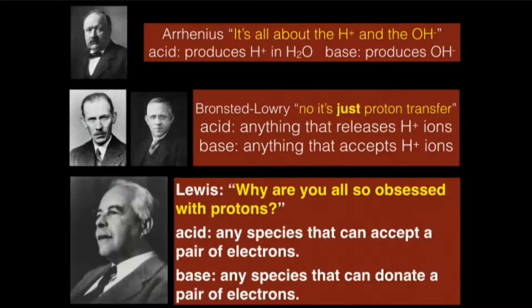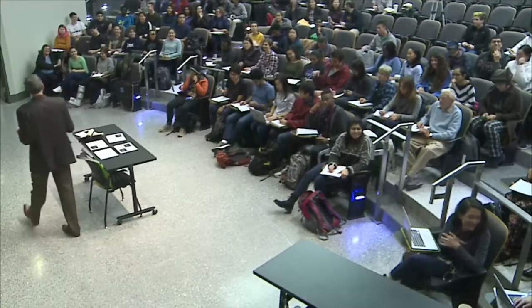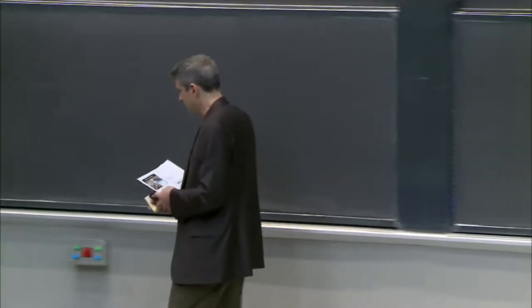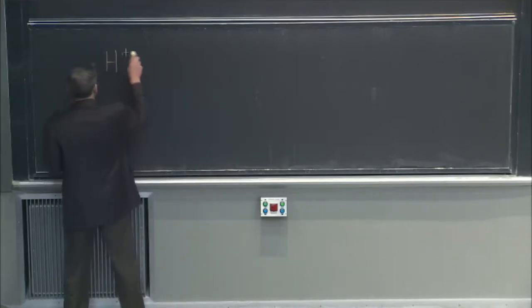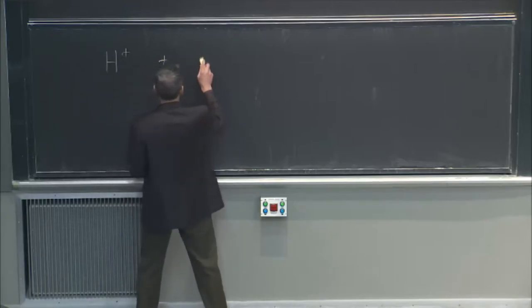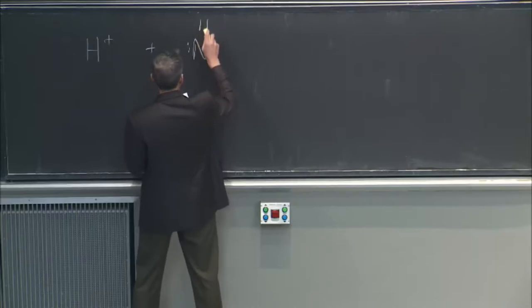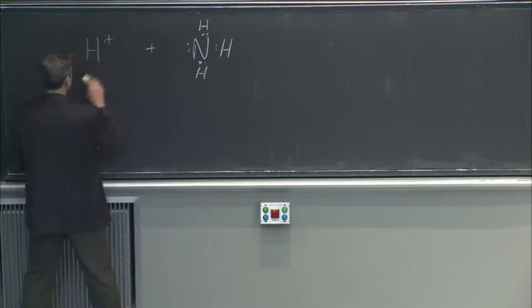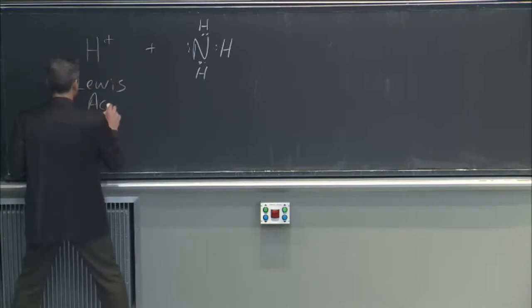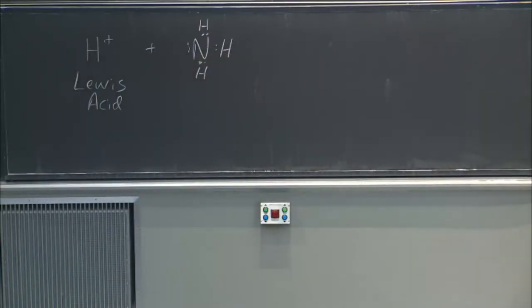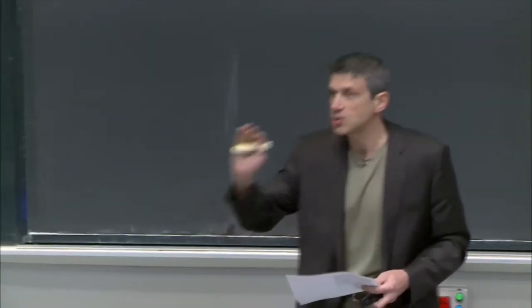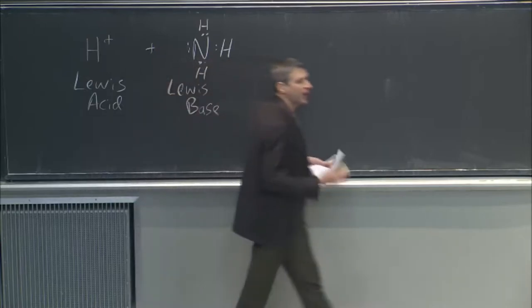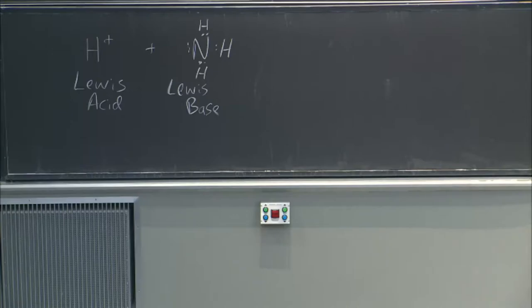Then there's Lewis, who broadsided these guys because he said this is the most general way to think about acids and bases. It is quite powerful because if we have H — Lewis had all the dots all over the place — this is a Lewis acid because it is ready to receive. What is it ready to receive? Not atoms, only electrons. And this would be a Lewis base because it is ready to give a pair of electrons and form a bond together.